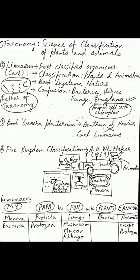But in this two-kingdom classification there was confusion. Organisms like bacteria, viruses, fungi, and Euglena could not be classified into just plants and animals. Bacteria has a cell wall so it could be considered a plant, but it also moves, so it could be considered an animal. Viruses do not have a cell wall and have DNA or RNA. Fungi had a cell wall but no chloroplast.